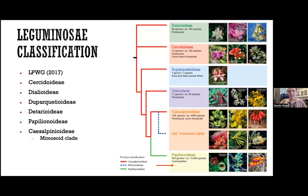Those familiar with legume taxonomy may have heard about the previous classification into three families: Caesalpinioideae, Mimosoideae, and Papilionoideae. However, since the first phylogenetic studies, it's been known that Caesalpinioideae did not form a monophyletic group, requiring further classification. After years of discussion, a consensus was reached dividing the family into six subfamilies: Cercidoideae, Dialioideae, Duparquetioideae, Detarioideae, Papilionoideae, and Caesalpinioideae, which now includes the mimosoide clades.